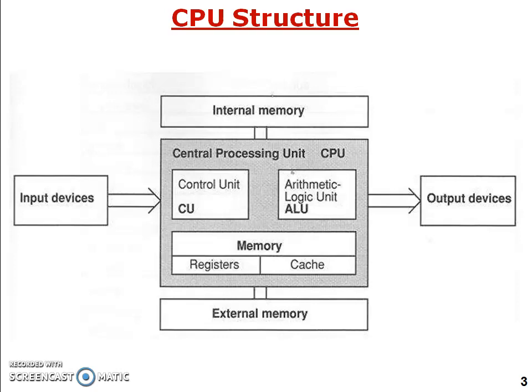Registers are basically used to store temporary results — whatever intermediate results the arithmetic and logic unit produces will be stored in register memory. It is a faster memory whose speed is also close to the processor. In the diagram, the CPU has control units, ALU sections, and memory which includes registers and cache, as well as RAM.